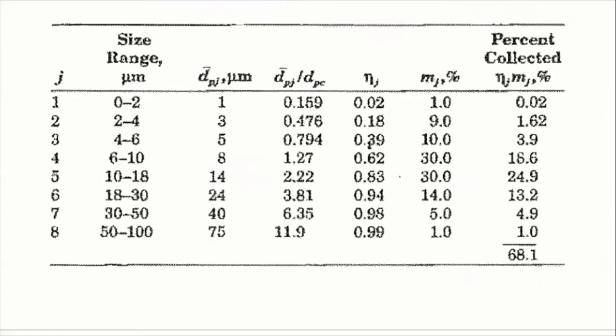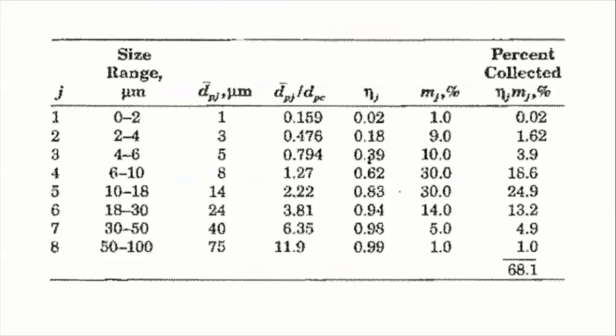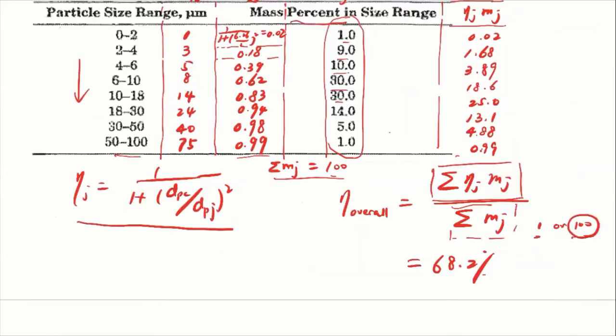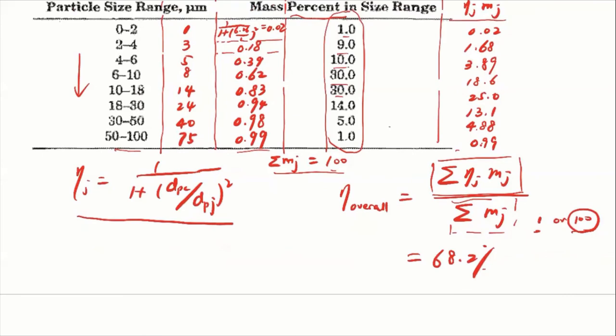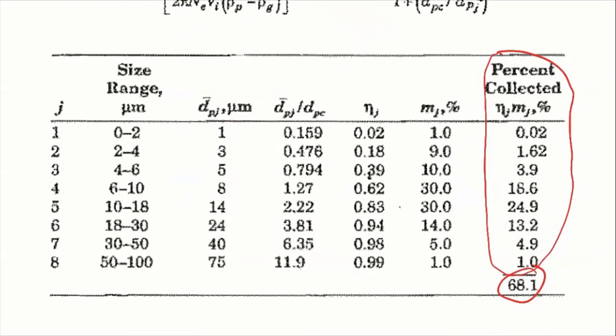This process is given in your textbook at Example 4.1. That's basically how we did the calculation here. The textbook got 68.1% and our calculation gives 68.2% — not different by a lot. As long as our results are within 5%, we should be good.